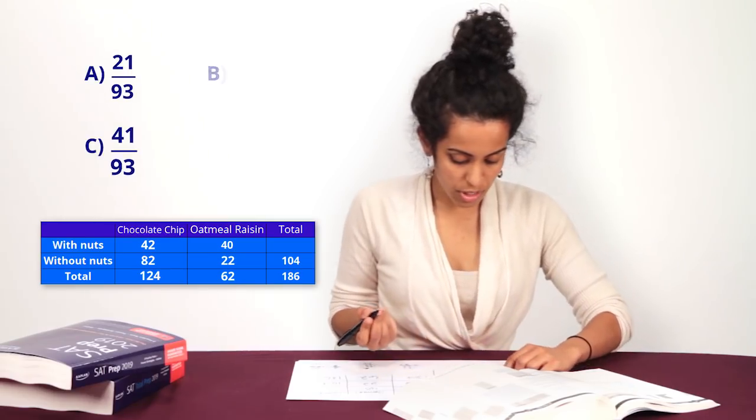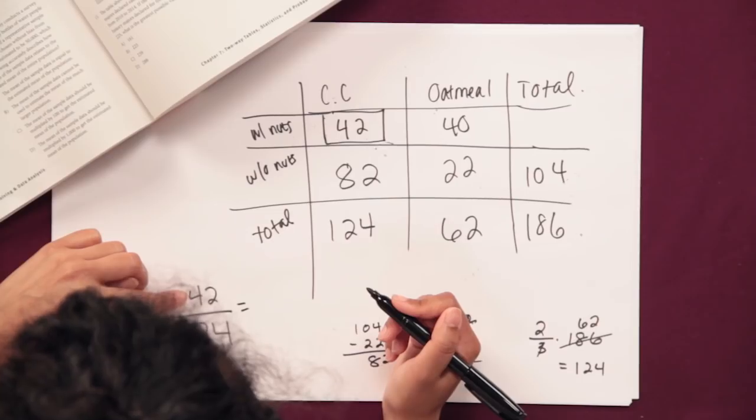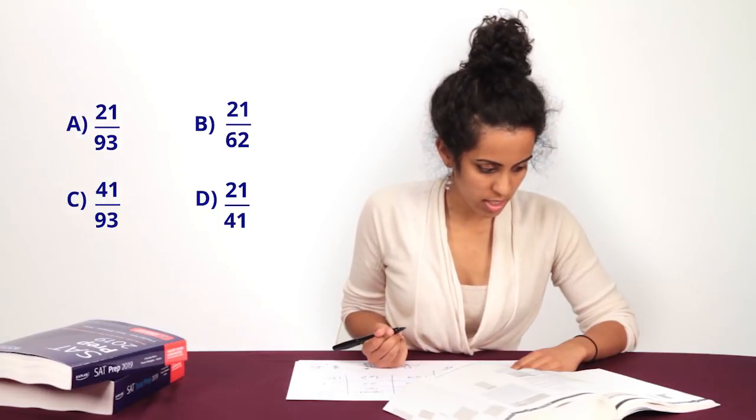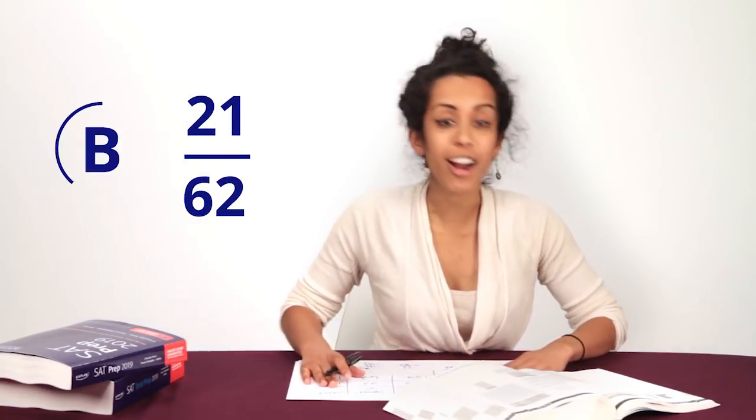So now the probability is going to be 42 over 124, but that's not simplified. So let's just start simple. 21 over 62. Oh, that's an answer. Sweet, I don't have to simplify. Oh yeah, you can't simplify it anymore. Great. Our answer is B.